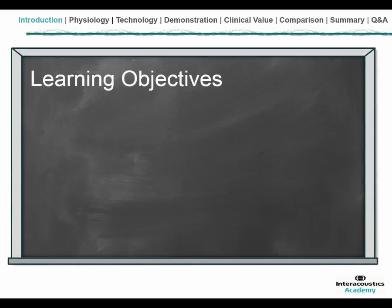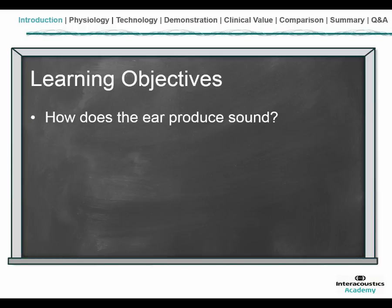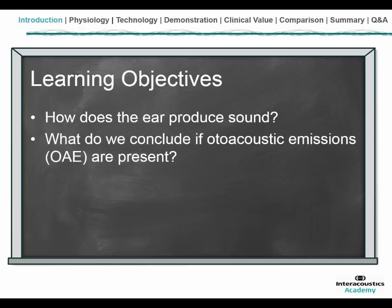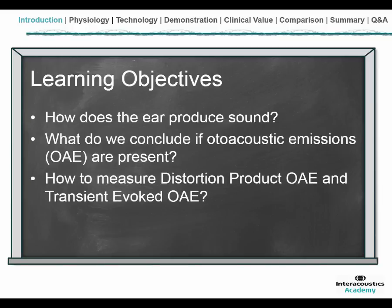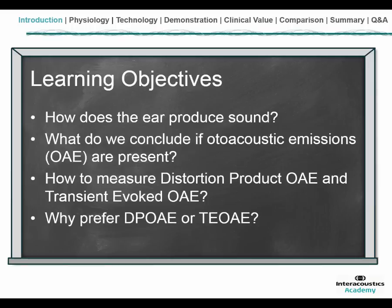The learning objectives today are as follows. We would like to explain the outcome that the ear is capable of producing sound, because otoacoustic emissions is the sound that we can record coming out of the ear. Then we want to explain what we can conclude from these measurements — what does it mean if an OAE is present? There are two methods of measuring OAEs currently: distortion product OAEs and transient evoked OAEs. We will explain the technology behind each, and then discuss the differences between the two and whether those differences are relevant in order to prefer one over the other.